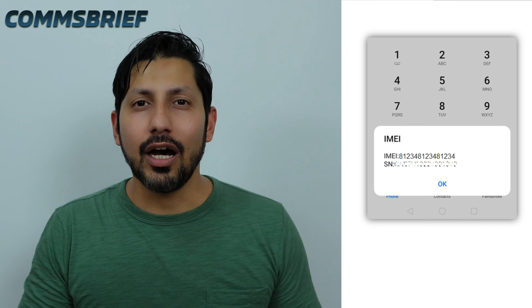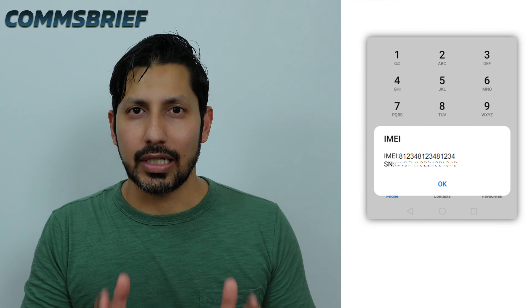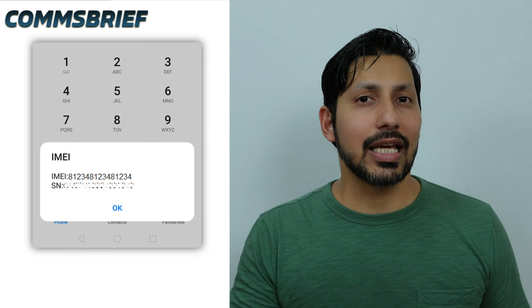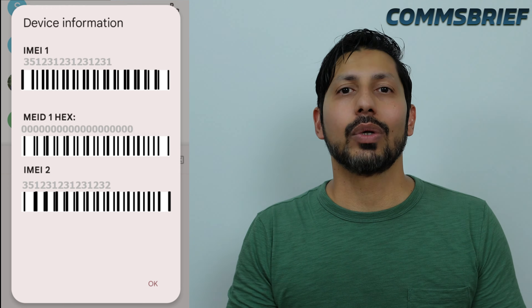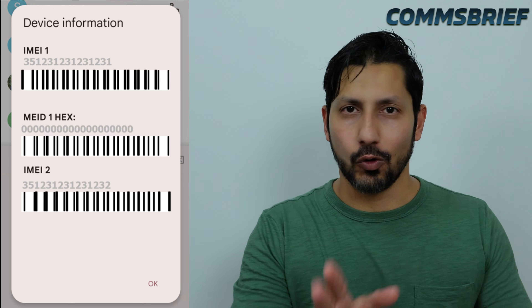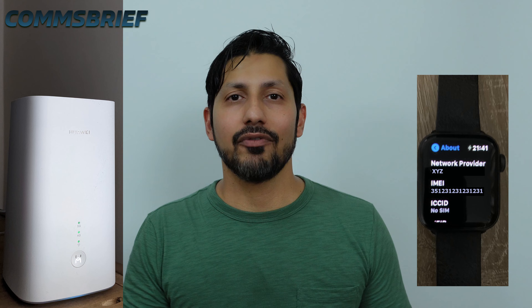An IMEI number is a 15-digit code — all numbers, no letters — and it's assigned to every SIM slot in a mobile phone. If your phone takes one SIM card, you have one IMEI; two SIM cards means two IMEI numbers, and so on. The IMEI number is not limited to mobile phones — any device that can take a SIM card, such as a mobile broadband router or a SIM-enabled smartwatch, can also have an IMEI number.